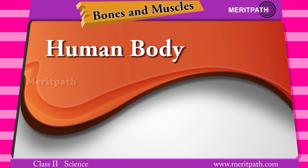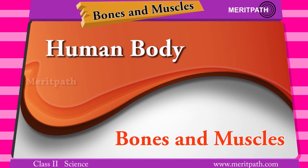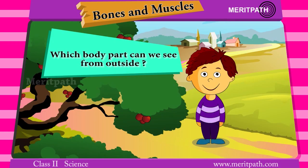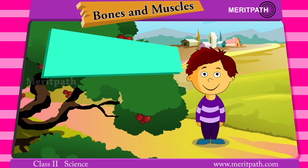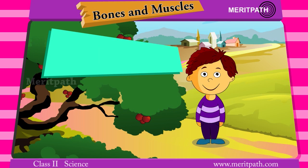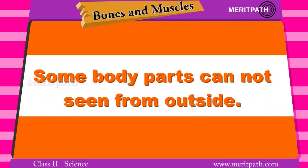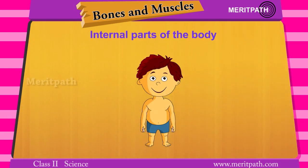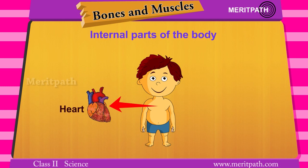The human body has bones and muscles in it. Some body parts can be seen from outside, such as the head, legs, feet, eyes, and nose. Whereas some body parts cannot be seen from outside, like the heart, brain, and kidneys.